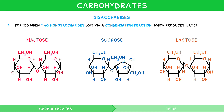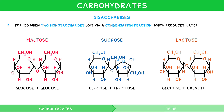Maltose is made of glucose plus glucose. Sucrose is made of glucose plus fructose. And lactose is made of glucose plus galactose.